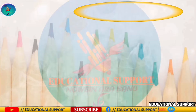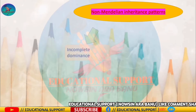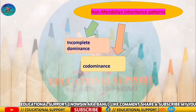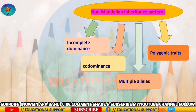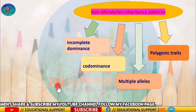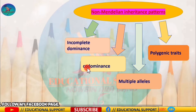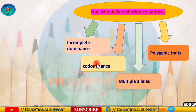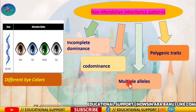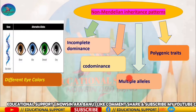The non-Mendelian inheritance patterns include incomplete dominance, co-dominance, multiple alleles, and polygenic traits. In incomplete dominance, both alleles in the heterozygous pair are expressed. In co-dominance, a mixed phenotype of both alleles in the heterozygous allele pair can be observed. Multiple alleles are the presence of more than two alleles in the population.